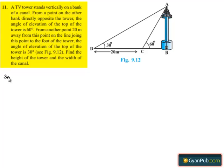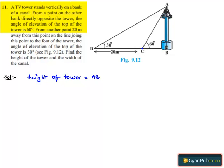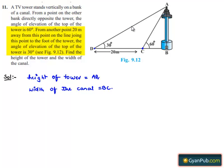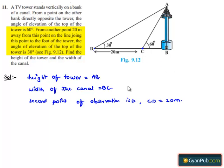Moving on to the solution. In the given figure, the height of the tower is AB. There is a canal, and from the bank of the canal C, the top of the tower is observed at an angle of elevation of 60 degrees. Therefore the width of the canal will be BC. There is another point of observation D, which is 20 meters away from the canal, where the angle of elevation is 30 degrees. The distance between C and D is given as 20 meters.